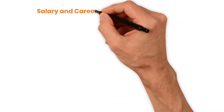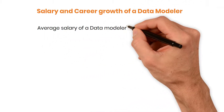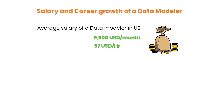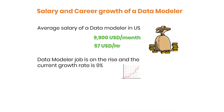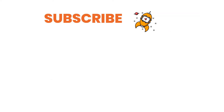Finally, let's see the salary and career growth of a data modeler. The average salary of a data modeler in the US is around $9,900 US dollars per month, that is $57 US dollars per hour. The data modeler job is on the rise and the current growth rate is 9%. If you want to become a data modeler, below are some very useful data modeling online courses. Enjoy and build your career as a data modeler. Subscribe to our channel for more career tips and job insights.